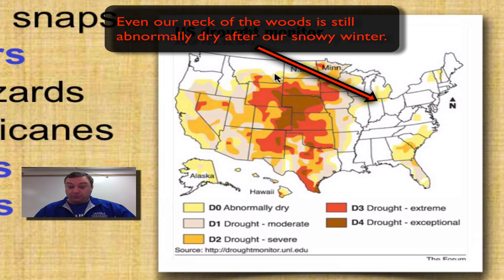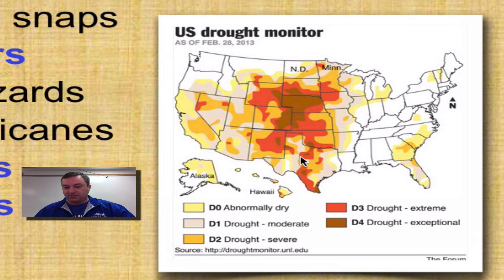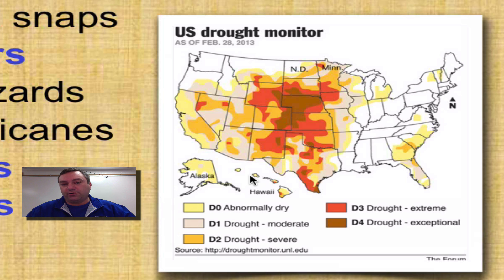Now the drought is here in the mid part of the United States along the Great Plains, and these are some heavy, heavy droughts. In fact, you're going to have some impact on farmers because there's just not enough rain for their crops to be able to survive.